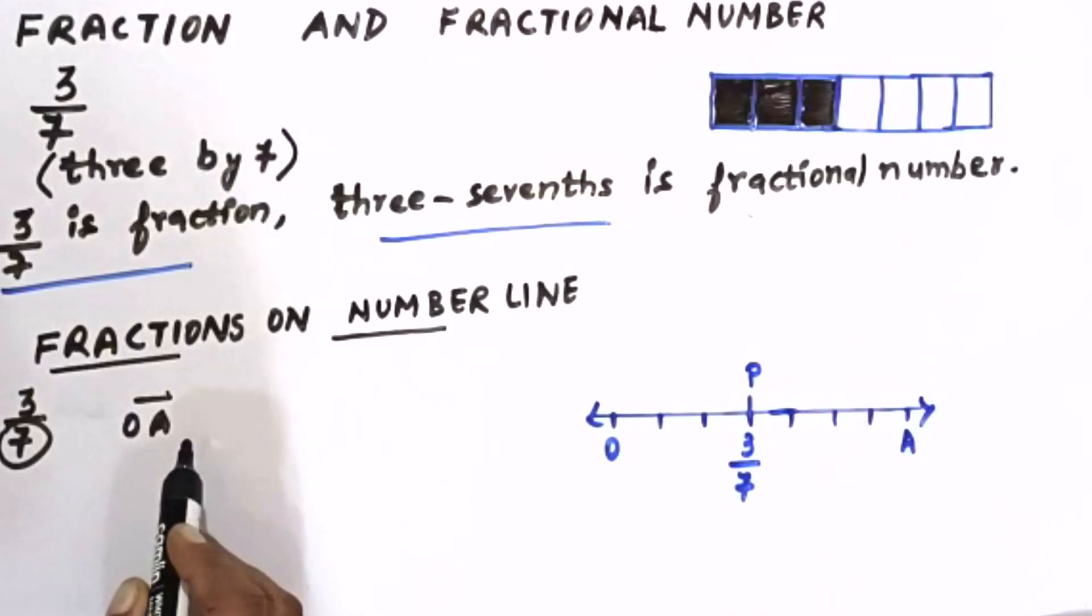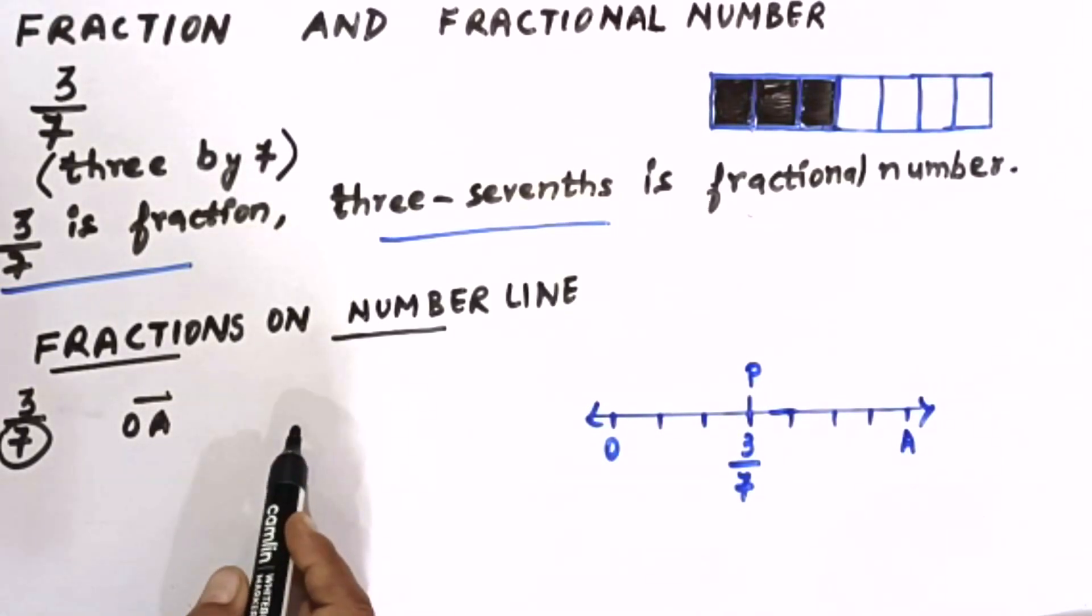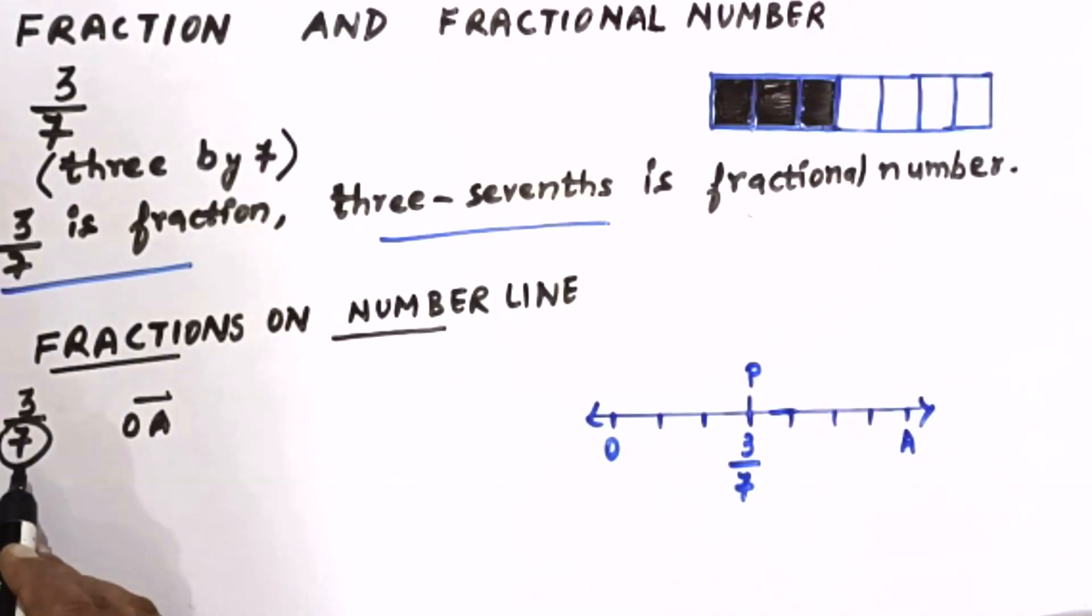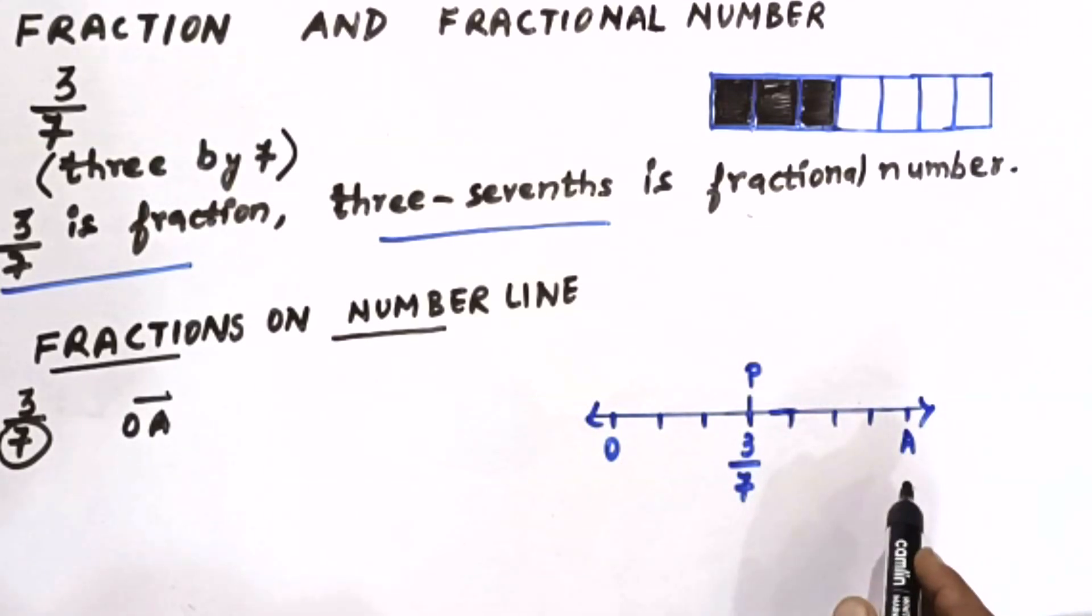Let's learn how to denote a fraction on a number line. Take the example of three by seven. For this we will take a line segment of unit length which we will divide into seven equal parts.